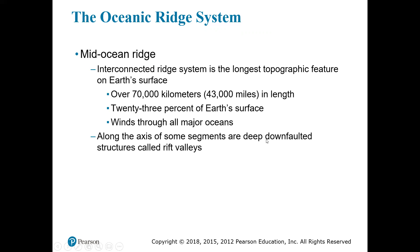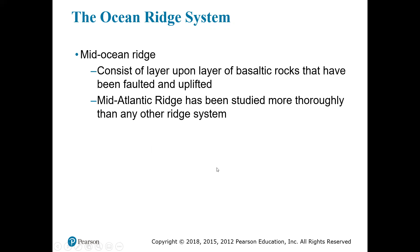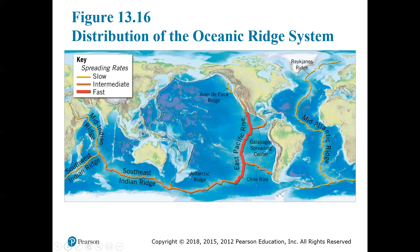Some segments of the oceanic ridge system are down-faulted structures called rift valleys, with different structure and topography than other ridges. This map shows the distribution of the oceanic ridge system, color-coded by spreading rates. The East Pacific Rise is spreading comparatively fast, whereas the mid-Atlantic ridge, the southwest Indian ridge, and the mid-Indian ridge are spreading relatively slow.